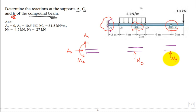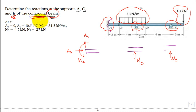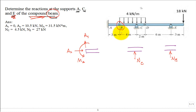A beam is a one-dimensional member — this one has a distributed load and a point load of 18 kN. But it's a compound beam. Just like a concurrent force system is a special case, a compound beam is not a simple single solid piece. What makes it special is that it is pin-connected at B and also pin-connected at D.